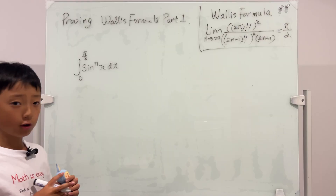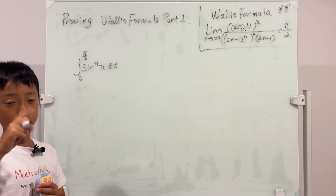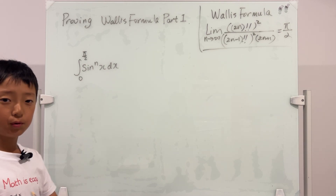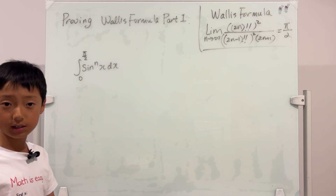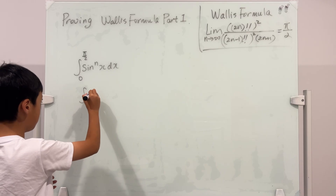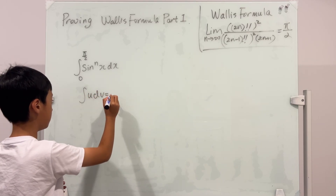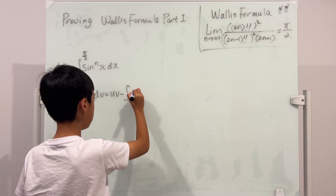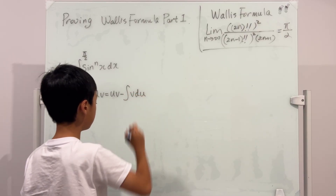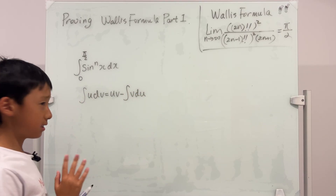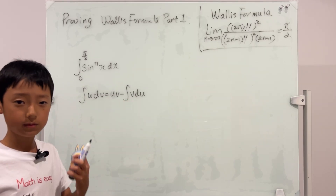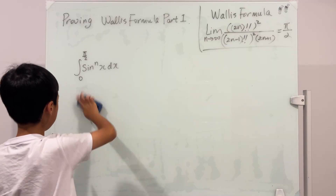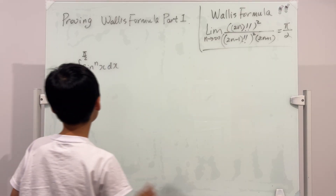I'm not going to use the form which is uv′, and so on. I'm going to use the more typical form, which is basically the same thing. It's the integral of u dv, and this is equal to uv minus the integral of v du. It's kind of the same as uv′ minus vu′, basically the same thing. I hope you know that formula.